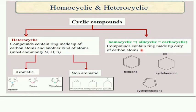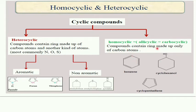These are nothing but cyclic compounds. Homocyclic means nothing but alicyclic or carbocyclic — compounds that contain a ring made of only carbon atoms. Examples include benzene, cyclohexanol, and cyclopentadiene. All these rings have only carbon atoms in the ring system.